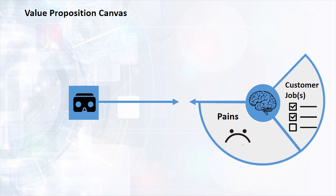We will highlight our customers' pains which annoy them while they are trying to get their jobs done. Pains are negative outcomes our customers hope to avoid, like dissatisfaction with existing solutions, challenges, frustrations, risks or obstacles related to performing a job.